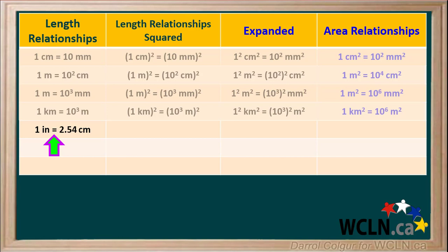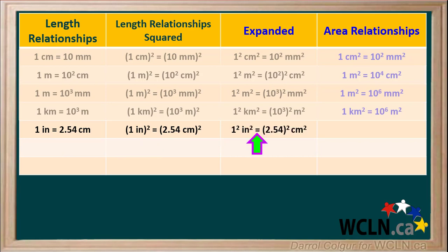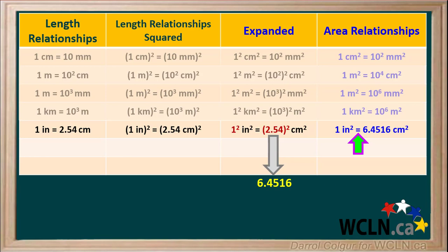Now for a relationship between an imperial unit and a metric unit. We know that one inch is equal to two point five four centimeters. Squaring both sides and expanding so that numbers and units are squared separately, one squared is equal to one and two point five four squared is equal to six point four five one six. So our final equation is: an area of one square inch is equal to an area of six point four five one six square centimeters.